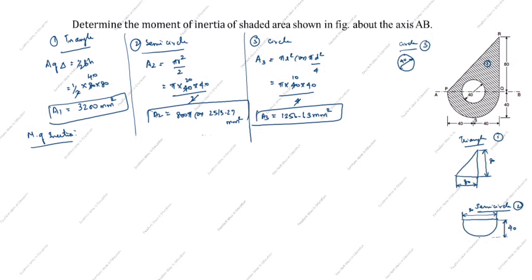Now we find the moment of inertia of the triangle about its centroidal x-axis. The formula is IAX1 = bh³/36. With b = 80 and h = 80: IAX1 = 80 × 80³ / 36 = 113777.78 mm⁴. This is the centroidal moment of inertia of the triangle.